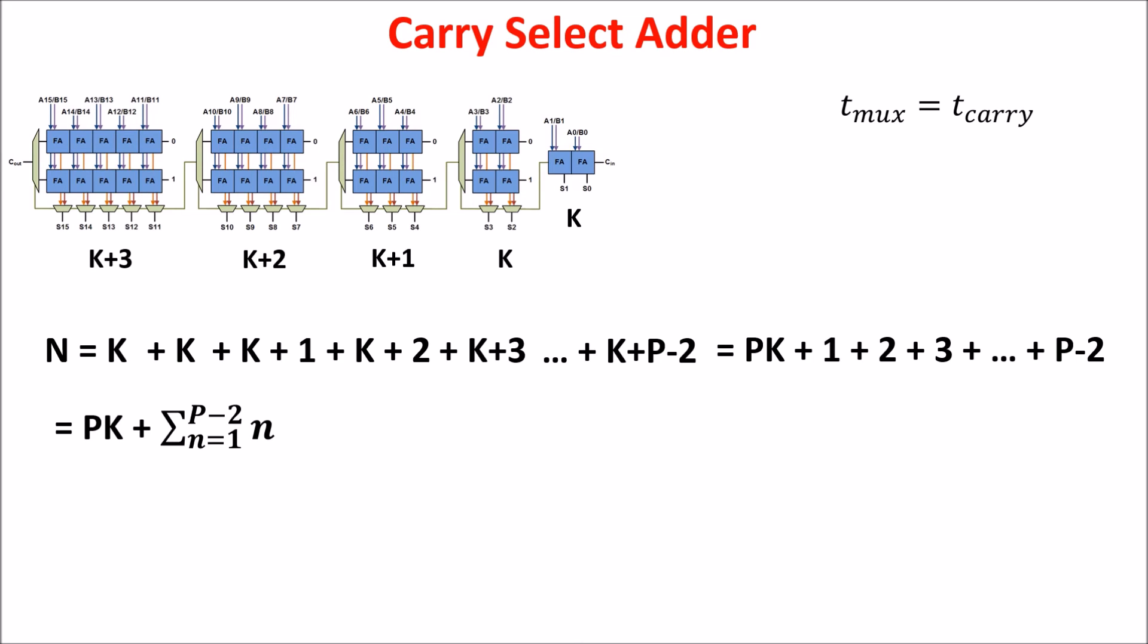We know that this series has this result. And since P is usually larger than 2NK, which by the way is 2 in our case, we can approximate it as this. So N equals P squared over 2. This means that P equals the square root of 2N.